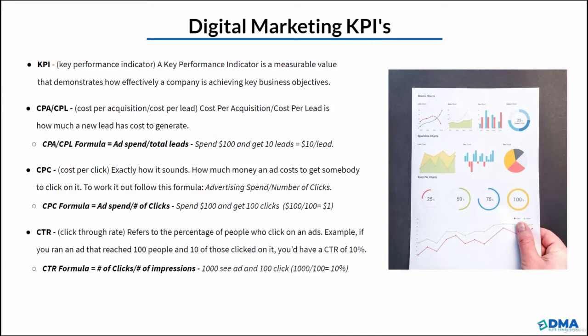Then we have CTR, click-through rate. This refers to the percentage of people who actually click on the ad. The formula is number of clicks divided by number of impressions. For example, 1,000 people see an ad and 100 people actually click on it — 1,000 impressions divided by 100 clicks gives us a 10% click-through rate.